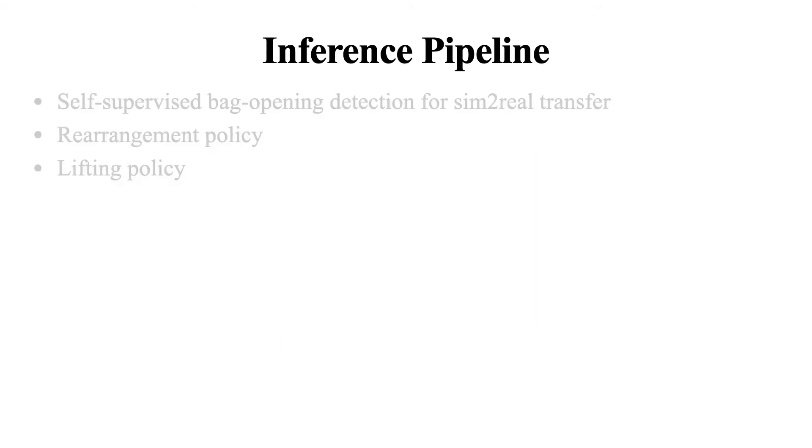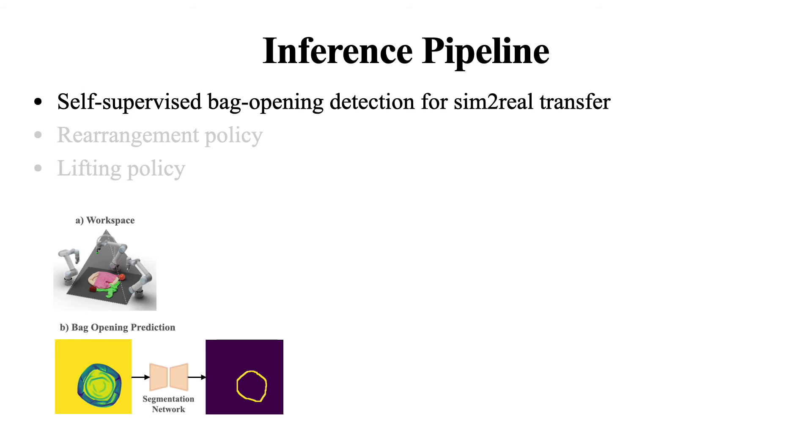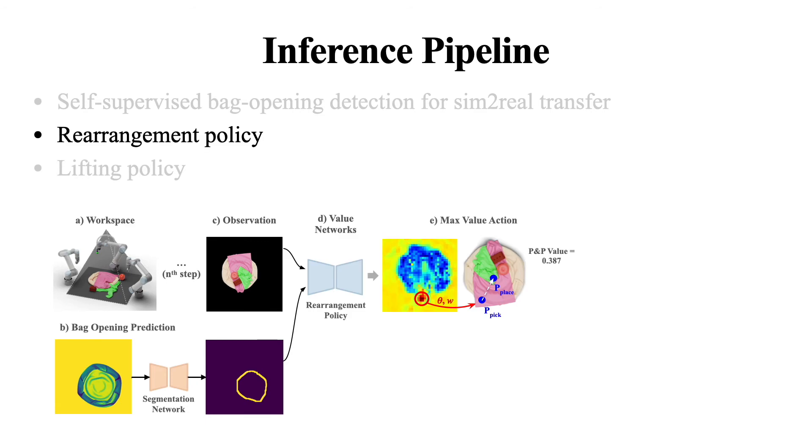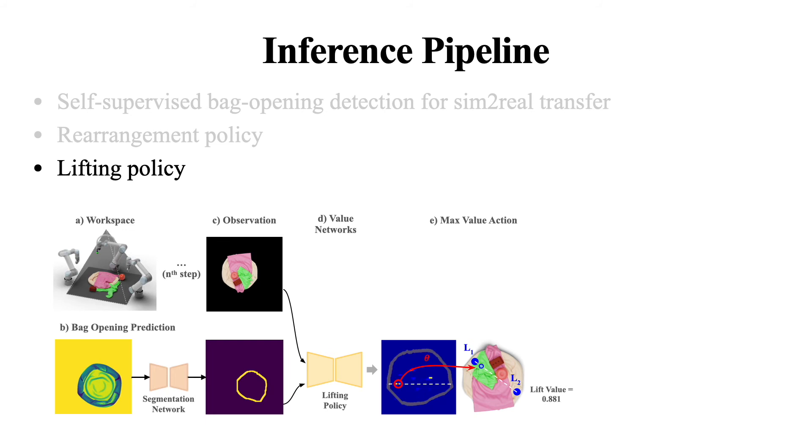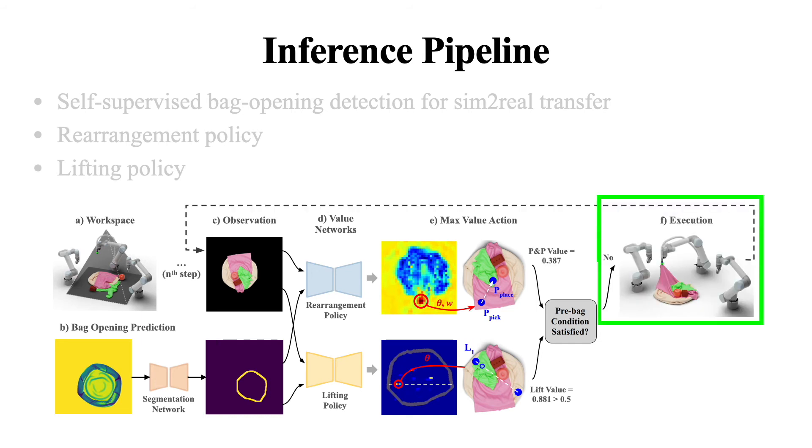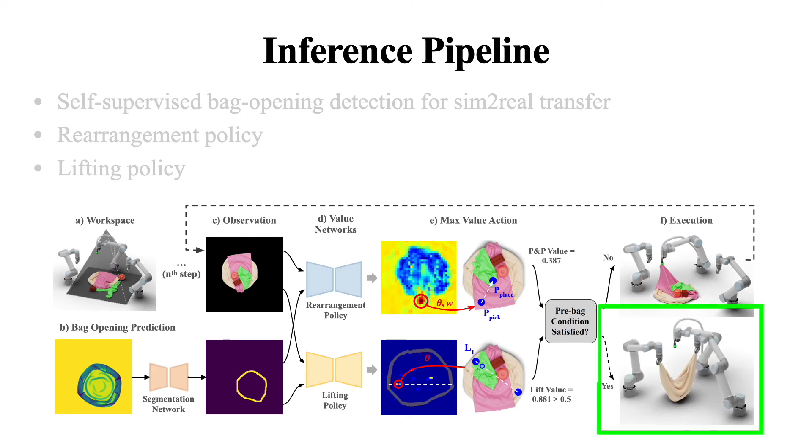And that brings us to our real-world inference pipeline, where the setup consists of three six-DOF robot arms with a top-down camera. As a first step to the bagging task, the segmentation network outputs a mask of the estimated bag opening. Then, for each step, the observation consists of a top-down RGB image and the predicted bag opening. The rearrangement policy takes the observation as input and outputs dense value maps and the action corresponding to the highest pick and place score. The lifting policy also takes the observation as input and outputs the action corresponding to the highest lift score. The robot uses the output of both these policies to determine if the pre-bagging conditions are satisfied. If the lifting score is less than a threshold, which is 0.5 in the real world, then the rearrangement action is executed and the system proceeds to the next step. Otherwise, rearrangement stops and the lift action is executed.